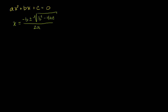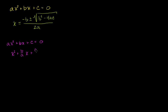So the first thing I want to do, so that I can start completing the square, let me rewrite the equation right here. So we have ax squared plus bx plus c is equal to 0. The first thing I want to do is divide everything by a, so I just have a 1 out here as a coefficient. You get x squared plus b over a x plus c over a is equal to 0.